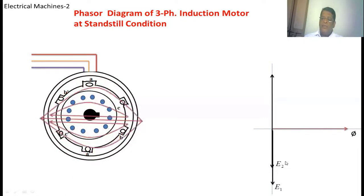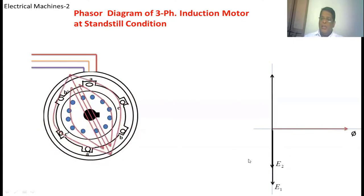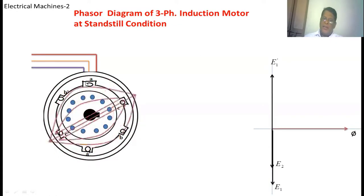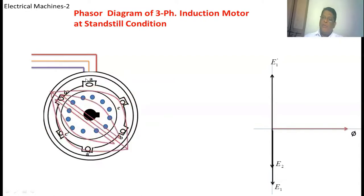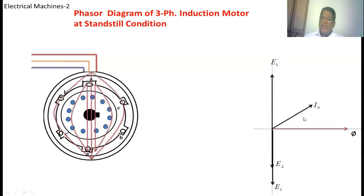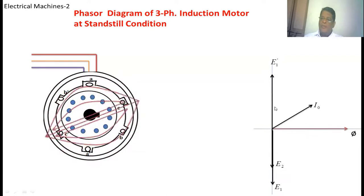Because of this flux, the two voltages are induced — one in the stator winding and another in the rotor winding. We have taken one more phasor, E1-dash, which is nothing but opposite to E1. Whenever the voltage E1 is induced in the stator winding, it is opposite to the supply voltage V, causing a voltage drop in the supply voltage. The motor takes a no-load current, which can be resolved into two components: the horizontal component is the magnetizing current and the vertical component is the core loss current.